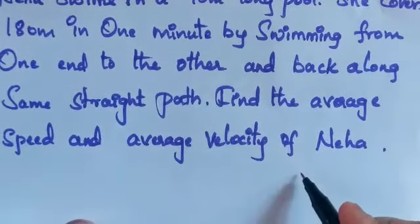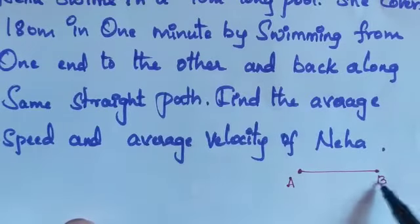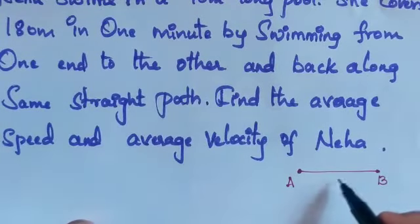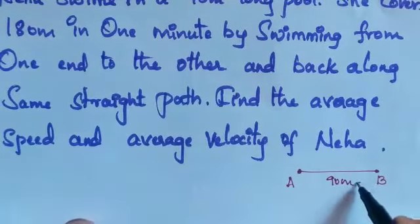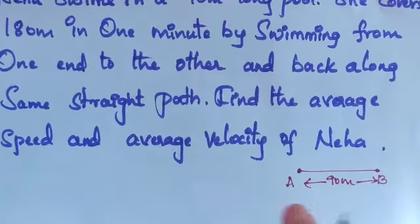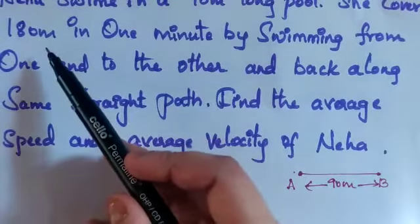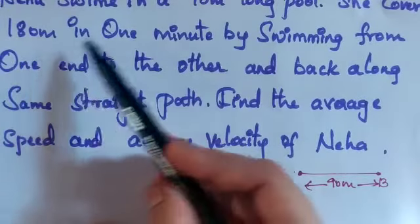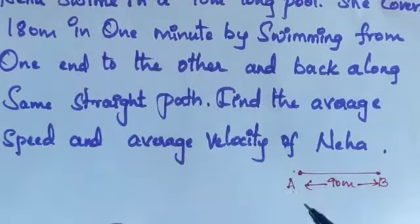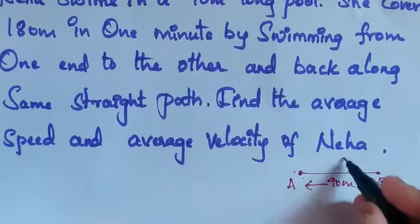What does this mean? Consider the pool with endpoints A and B. The length of the pool is given as 90 meters. Neha has swum from A to B and from B back to A. They have given that she covered 180 meters in one minute. The pool length is 90 meters, so 180 meters means Neha has traveled A to B, then B to A.